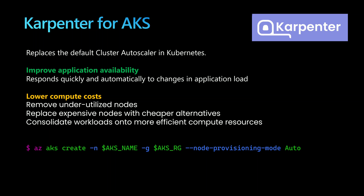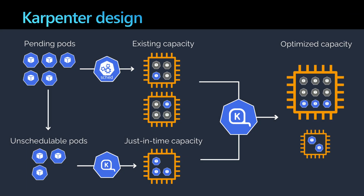Karpenter can detect underutilized VMs, take the workloads off those VMs, delete those VMs, and then reschedule the workloads onto more efficient compute resources. Karpenter is supported in AKS today as an extension. To enable it, you just use the flag node provisioning mode equal to auto, and with that you would have Karpenter running inside your AKS cluster.